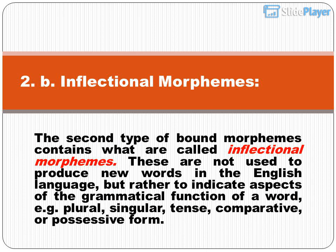Inflectional morphemes: the second type of bound morphemes contains what are called inflectional morphemes. These are not used to produce new words in the English language, but rather to indicate aspects of the grammatical function of a word — for example, plural, singular, tense, comparative, or possessive form.